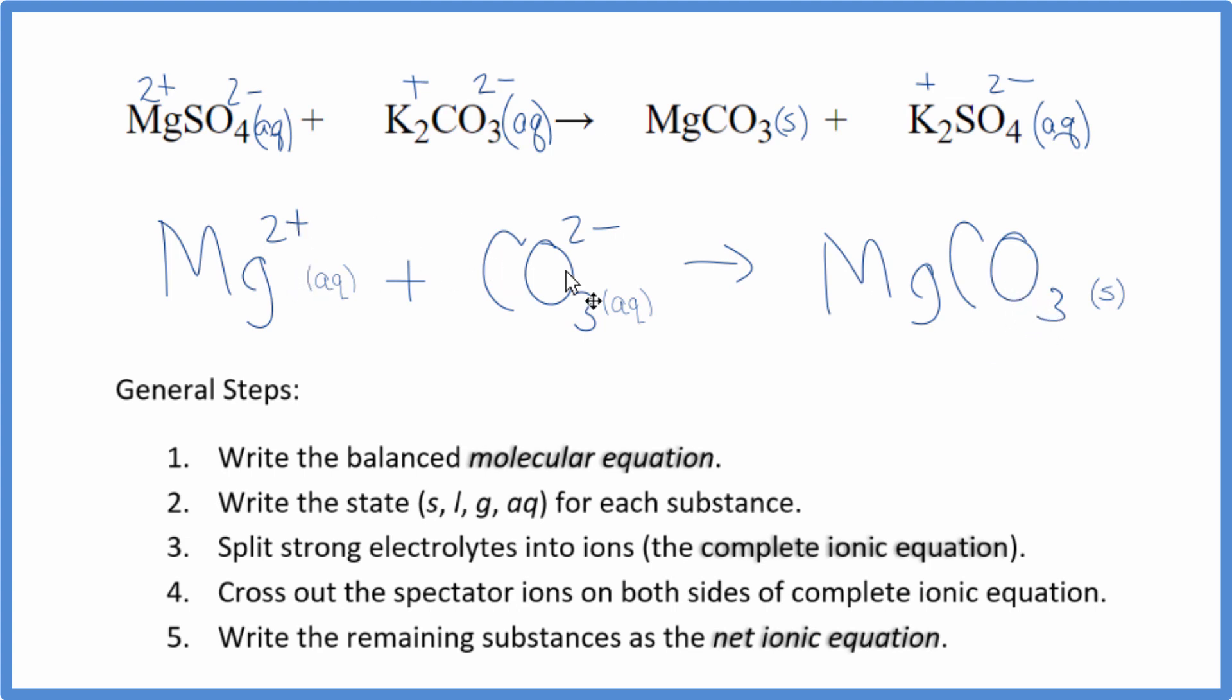If you count the atoms up, they'll be the same on both sides. This is Dr. B with the balanced net ionic equation for MgSO4 plus K2CO3. Thanks for watching.